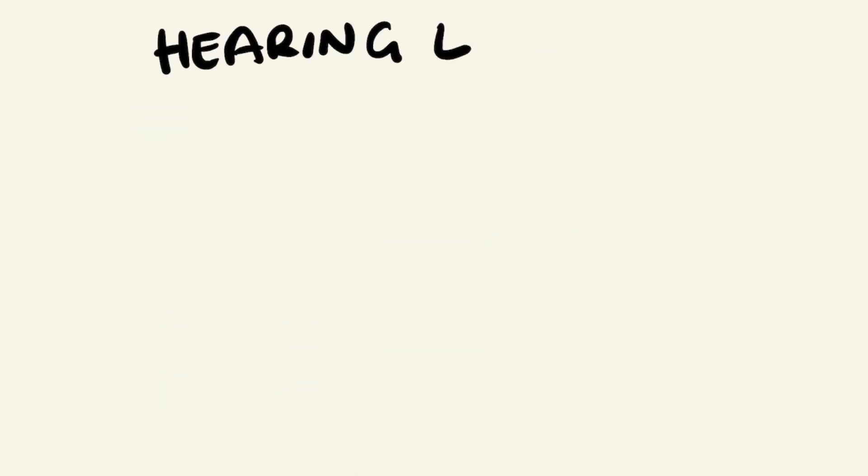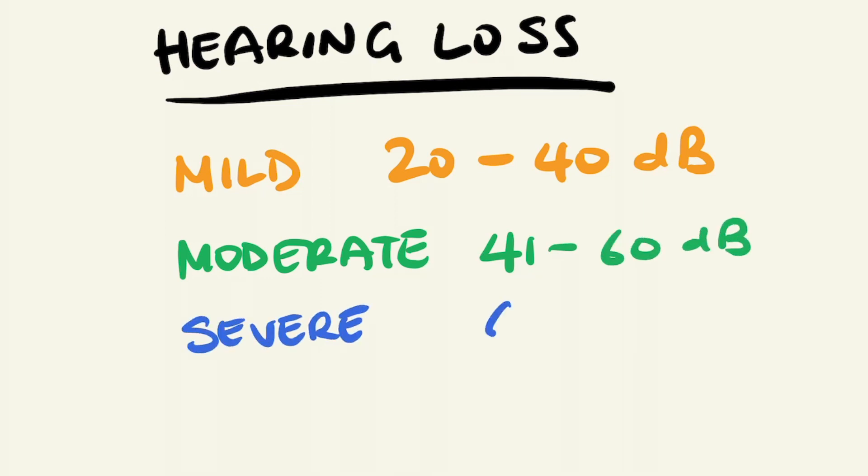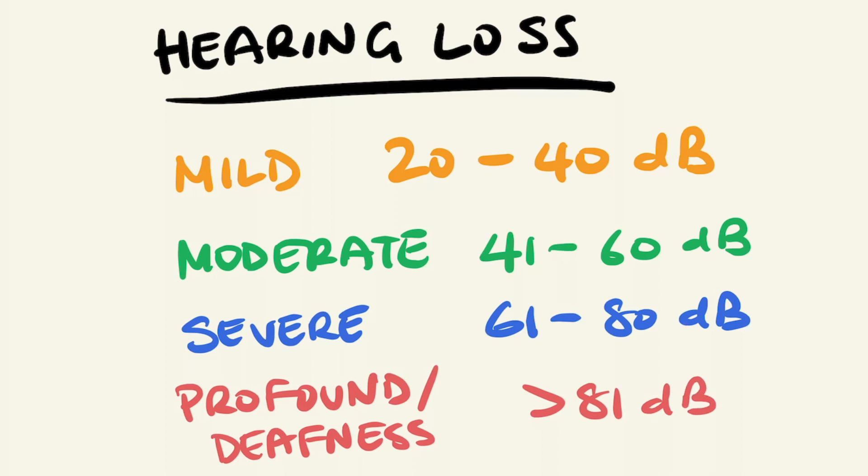Hearing loss can be classified depending on the amount of decibels shifted below the normal hearing threshold. A loss under 20 decibels is considered normal. However, beyond this, you can get mild hearing loss, which is hearing loss of 20 to 40 decibels. Beyond 40 decibels, it would be considered hearing impaired. Moderate hearing loss, with hearing loss of 41 to 60 decibels. Severe hearing loss, which is hearing loss of 61 to 80 decibels. And finally, profound hearing loss or deafness, with hearing loss of more than 81 decibels. At this stage, full hearing may not be restored, even with the use of hearing aids.